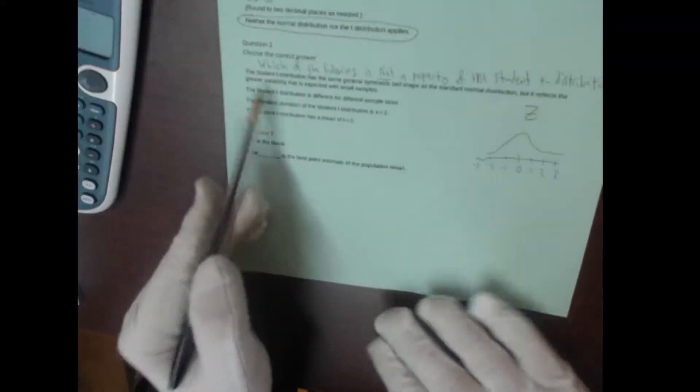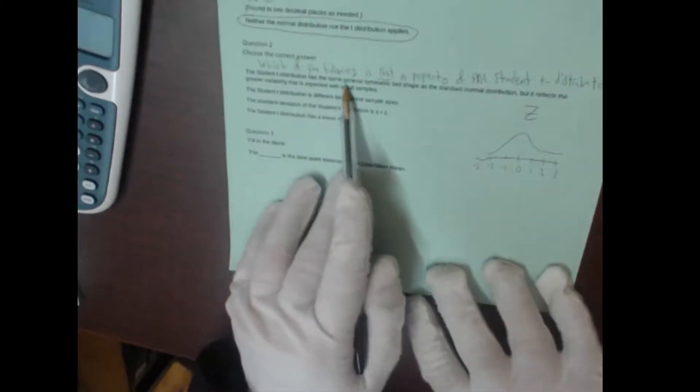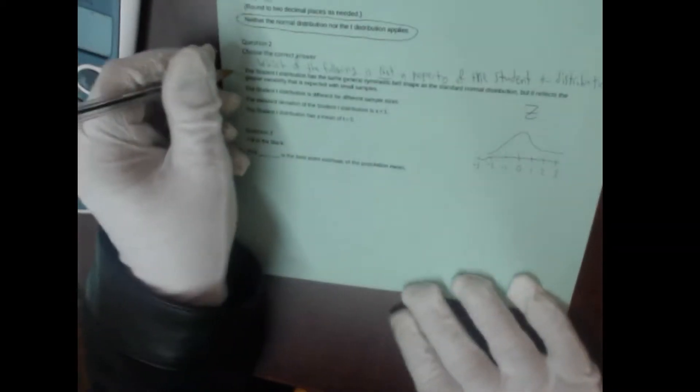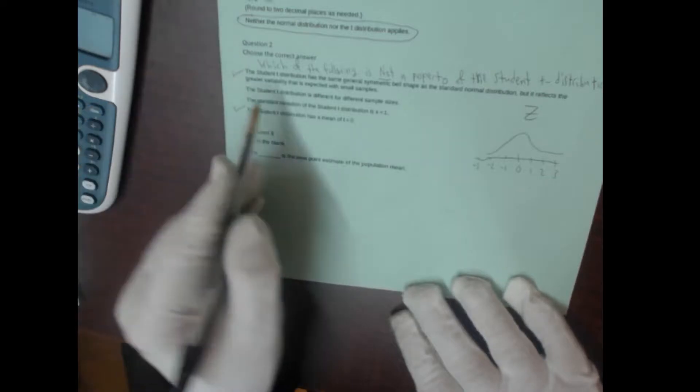Student was the name, a pseudonym of the person who invented this test. Anyway, which of the following is not a property? So the t-distribution does have the same general bell shape, but it reflects the greater variability expected with small samples. That is true. It does have a mean of zero as well, and it is a different shape for different sample sizes.